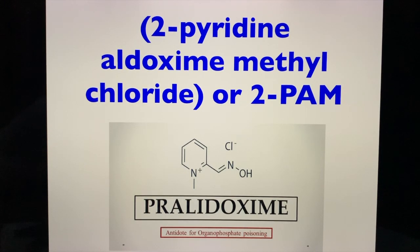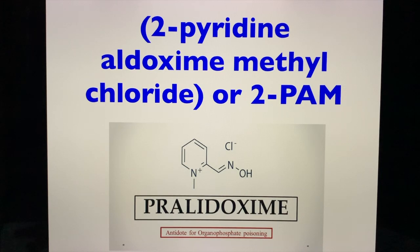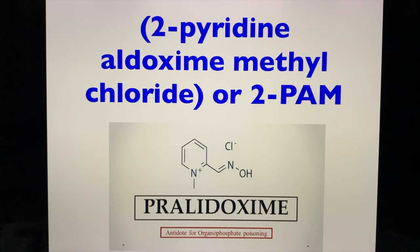What is pralidoxime? This is also known as 2-PAM. PAM stands for pyridine aldoxime methyl chloride. So pralidoxime, also known as 2-PAM, is biochemically 2-pyridine aldoxime methyl chloride.